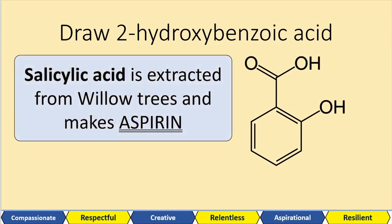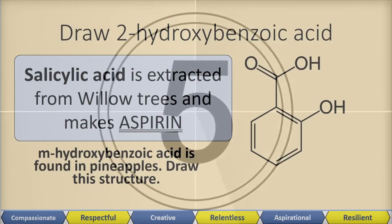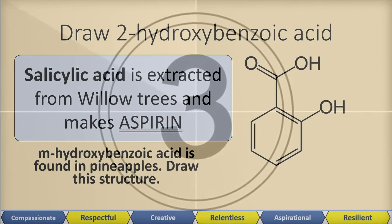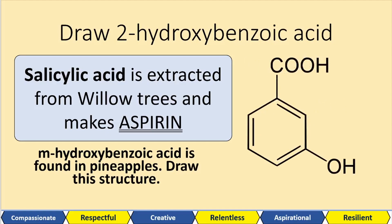Salicylic acid is extracted from willow trees and makes the drug aspirin. We've got an isomer of this molecule: m-hydroxybenzoic acid, which is found in pineapples. Try to draw that structure. The carboxyl group is position one on our benzene ring, and M is for three — if you rotate an M it looks like a 3. So we put the hydroxyl group on the third carbon.